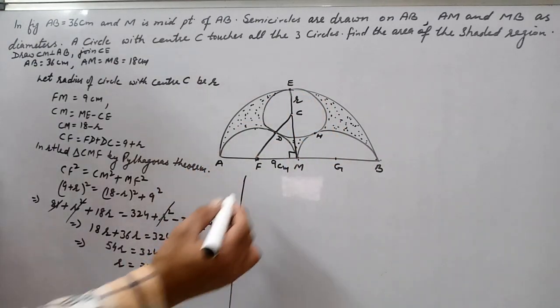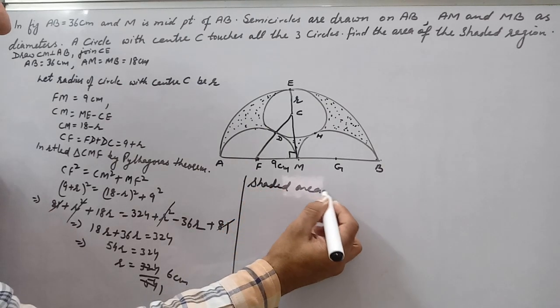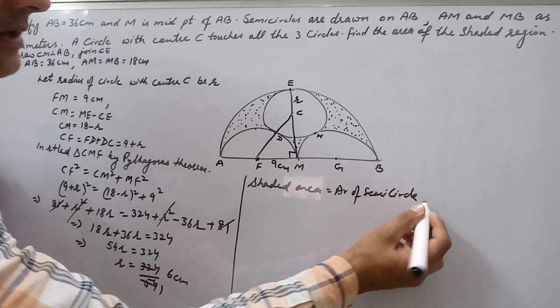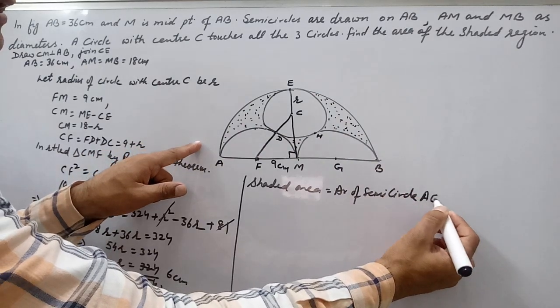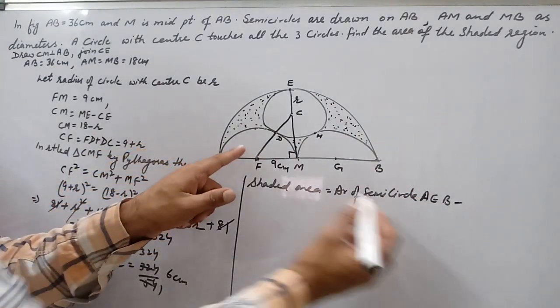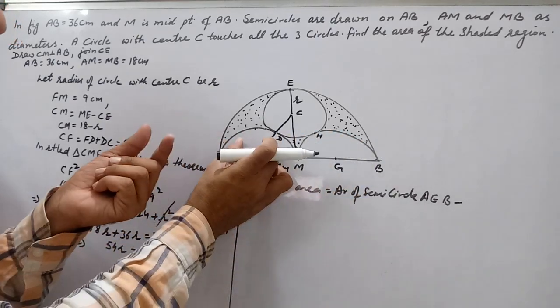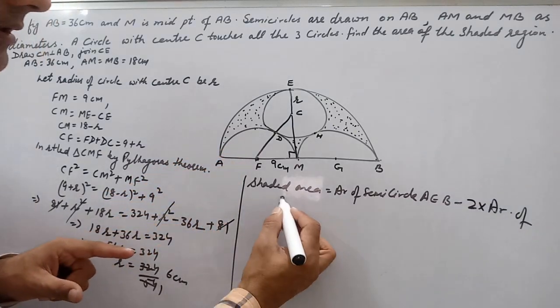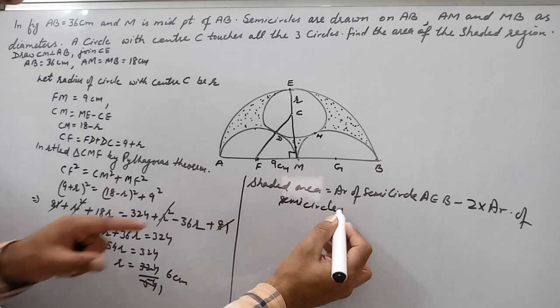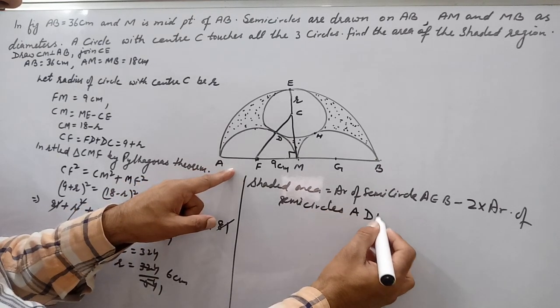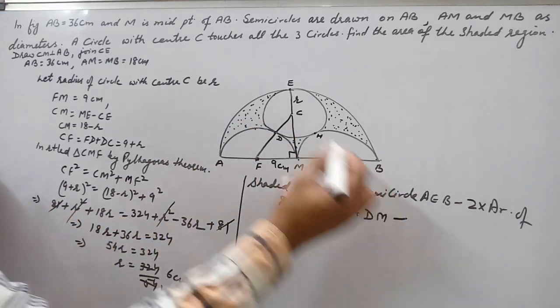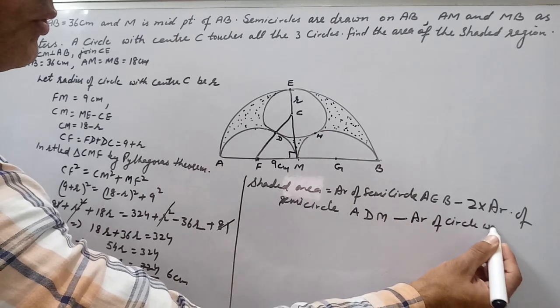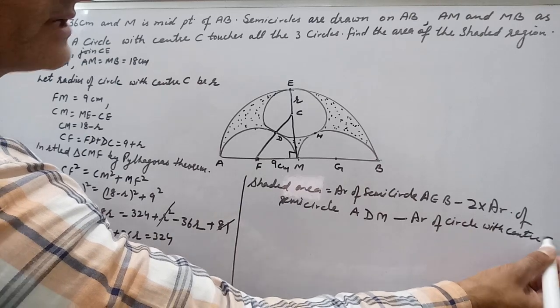Now we write shaded area. Area equals area of semicircle AEB minus 2 into area of semicircle, because these two semicircles have the same area. So minus 2 into area of semicircles ADM, minus area of circle with center C.